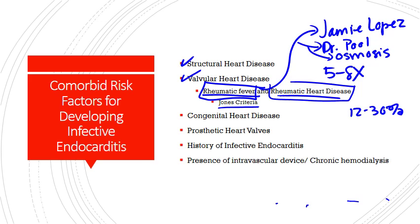Congenital heart disease is another comorbid risk factor. Lesions that predispose patients to infective endocarditis include aortic stenosis, bicuspid aortic valve, pulmonary stenosis, ventricular septal defect, patent ductus arteriosus, coarctation of the aorta, and tetralogy of Fallot — which you already learned about. Prosthetic valves are also a risk factor — anytime you have something that isn't normally there, bacteria are going to want to colonize it.